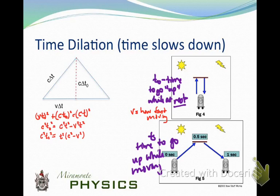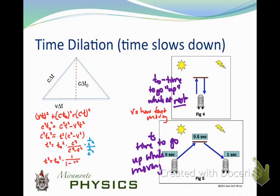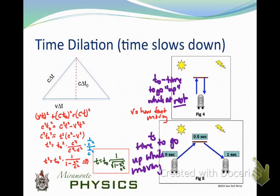I solve for T₀² by dividing by c², then move it to the other side and solve for T² instead, dividing by c². After doing more algebra, I take the square root. And this is what I get: T = T₀ / √(1 − v²/c²). Ta-da!